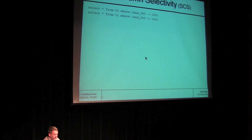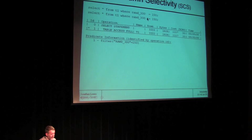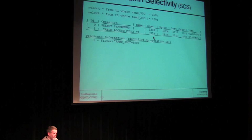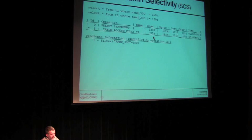Let's start working through examples. We'll start with single-column selectivity — SCS for short. SELECT WHERE ran_300 equals 150; SELECT WHERE ran_300 not equal to 150. What Oracle does is say: we've got 300 distinct values, we've got a million rows in the table — divide a million by 300, that's your answer: 3,333. Technically the arithmetic is looking at the column density. If you don't have histograms in play, the density is 1 over the number of distinct values. If you have 300 distinct values, the density is 1 over 300. Multiply density by a million rows, you get 3,333.